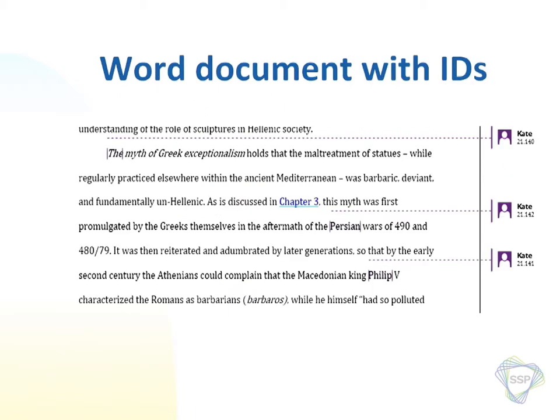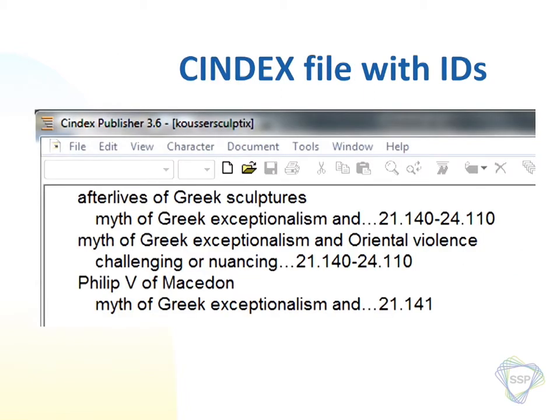This is what the indexer sees — a Word document where Kate has added some IDs. You can see she put an ID on the top of 'myth of Greek exceptionalism,' then she's picking up 'myth' again, and down here she's picking up 'Philip' as a historical figure she wants to reference. In Cindex, what she does is use those IDs rather than page numbers, because she doesn't care about the page numbers. She can build ranges using an ID from this point to that point, and that's what she works with.